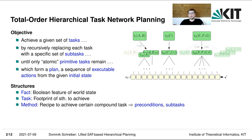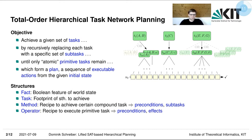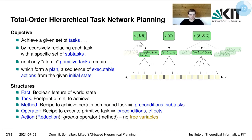A method has preconditions with respect to the current world state and a sequence of subtasks. An operator, similarly, is a recipe to execute a primitive task — it has preconditions and effects with respect to the world state. Methods and operators may feature variables in their signature.